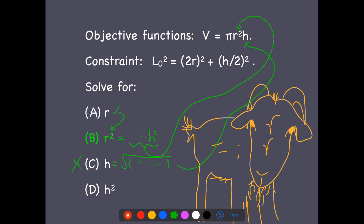And then h², there's no benefit because there's no h² up here in the V formula.